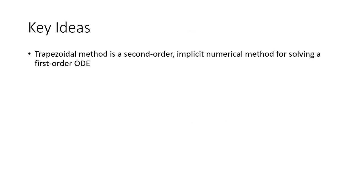Again, the key idea here is that the trapezoidal method is a second-order implicit numerical method for a first-order ODE. It's more accurate than the forward Euler or the backward Euler. In the next lesson, we're going to talk about stability conditions for these three methods.